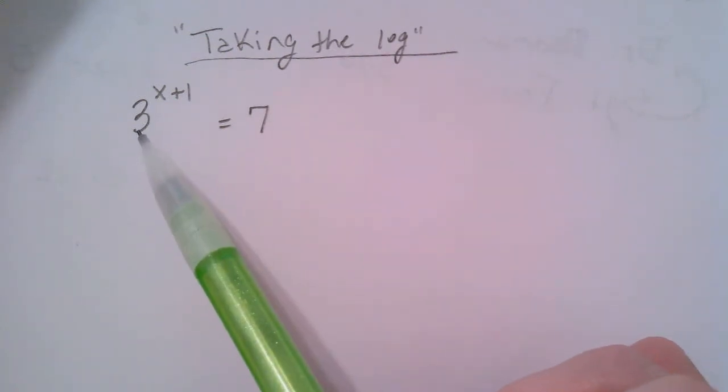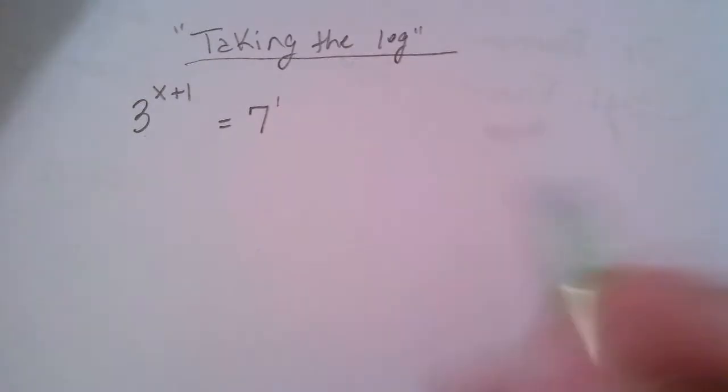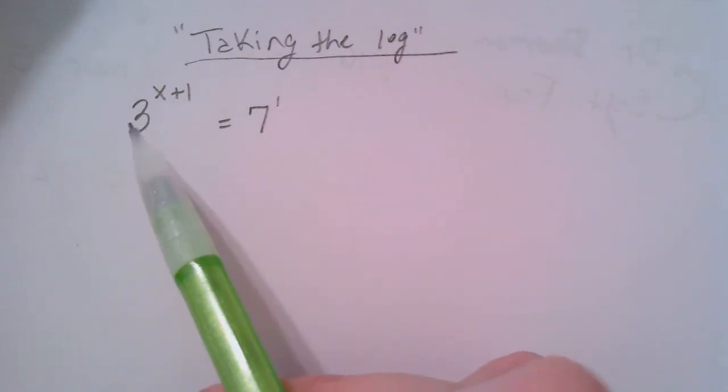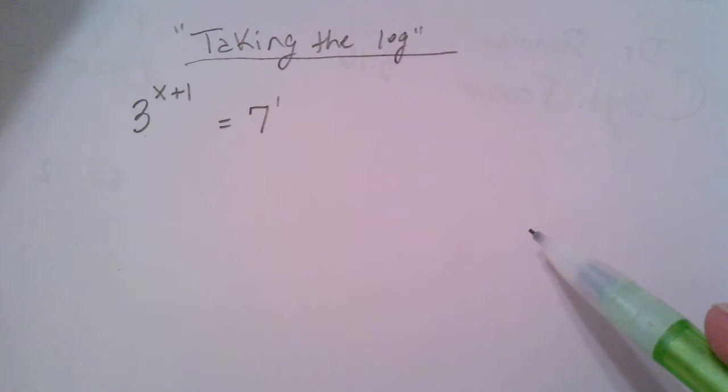In the previous video, the teacher was demonstrating how if you have a base of three and a base of seven, this is seven to the first power, that it would make sense to use a log with a base of three on both sides. But then at the very end, you always had to do this little change of base trick, which probably felt a little cumbersome to do after a few times.